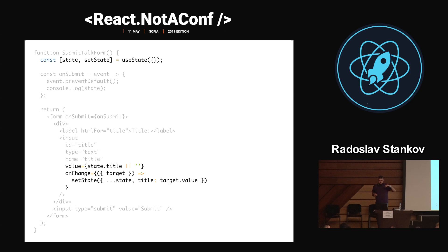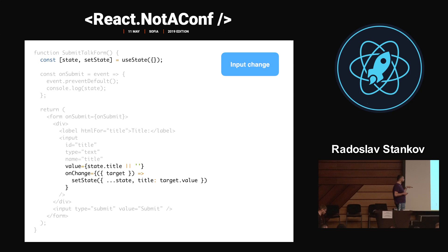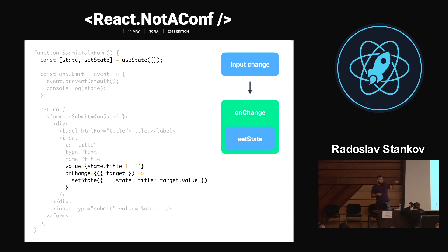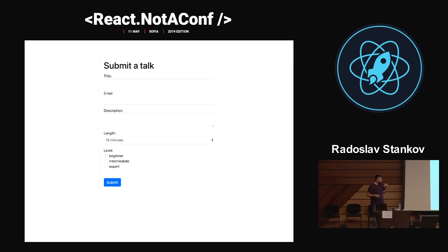Let's focus on this part here. What's happening? People always get confused — why do we need to do that? In React this is called a controlled form. The way this works is when the input changes, when somebody starts typing, there is an onChange handler triggered, and then it triggers setState, and then we render again with the new value. So when our users type we are constantly rendering the form. That's the basics of forms.